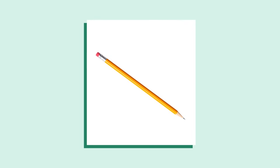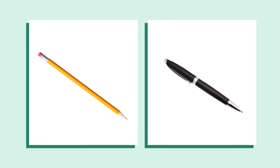Let's look back at our definition. The pencil producer is the sole producer of the product in question. A pencil and a pen are both writing tools, but are they similar enough to be considered close substitutes? How close is close enough to limit the pencil producer's market power?